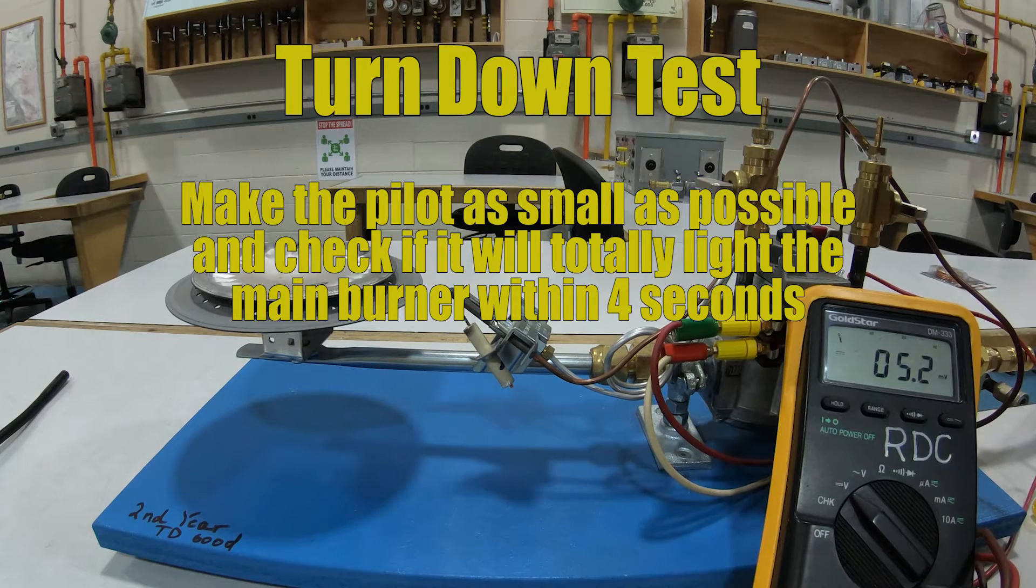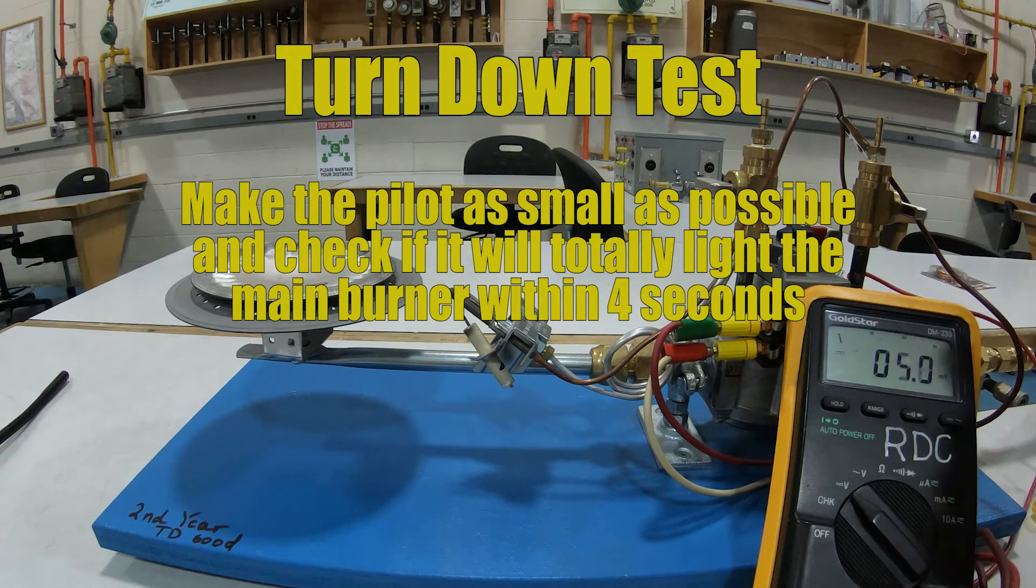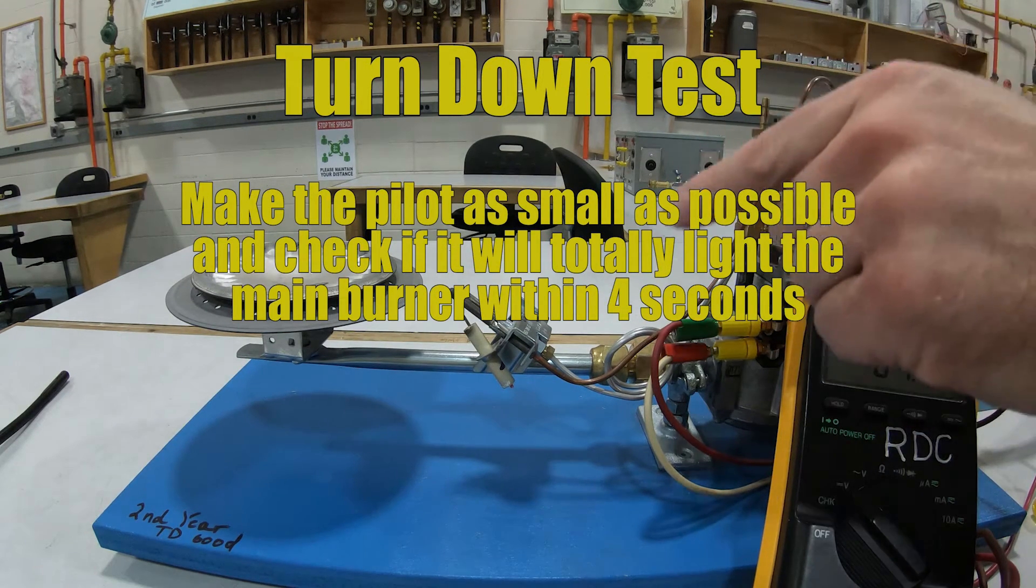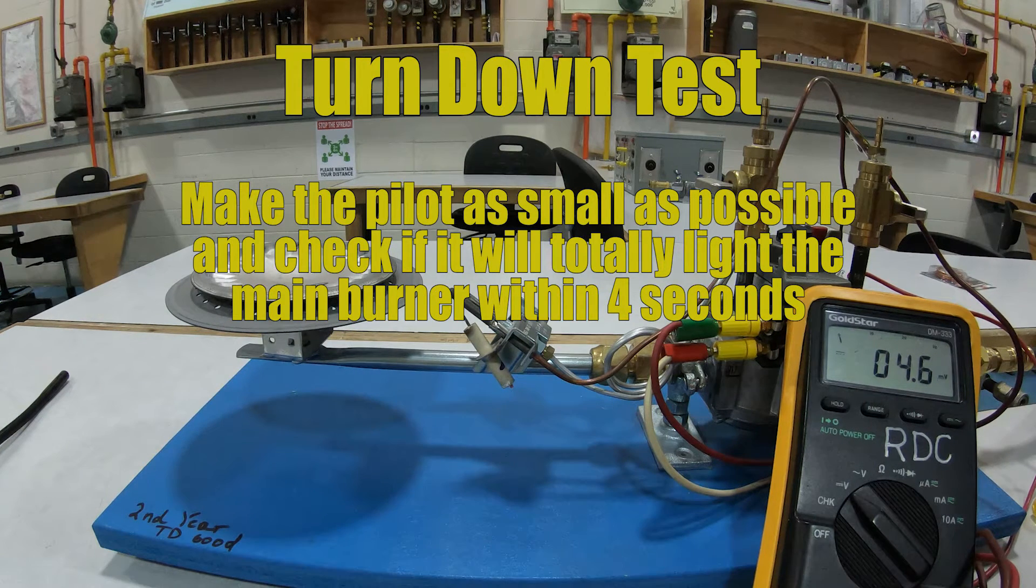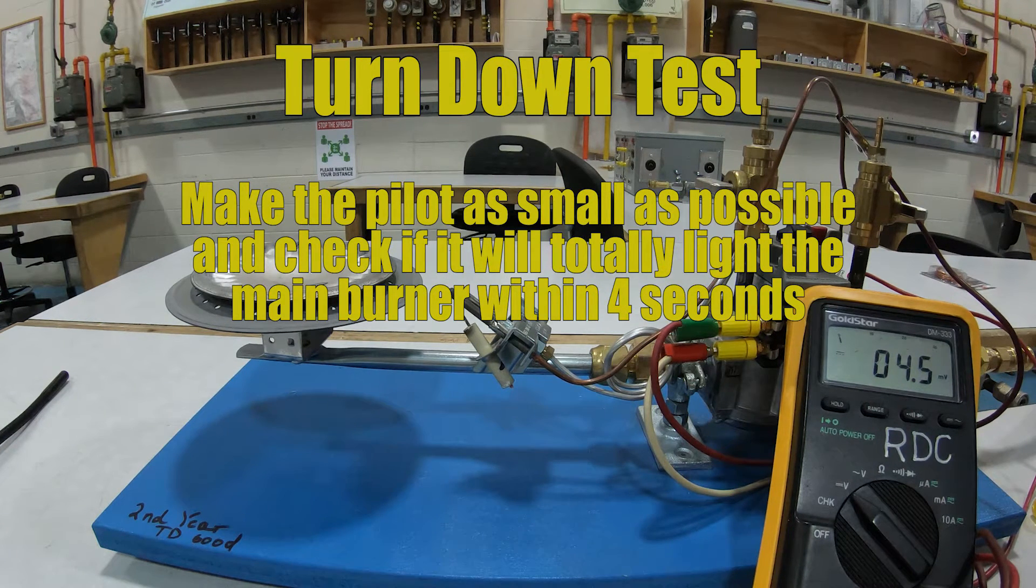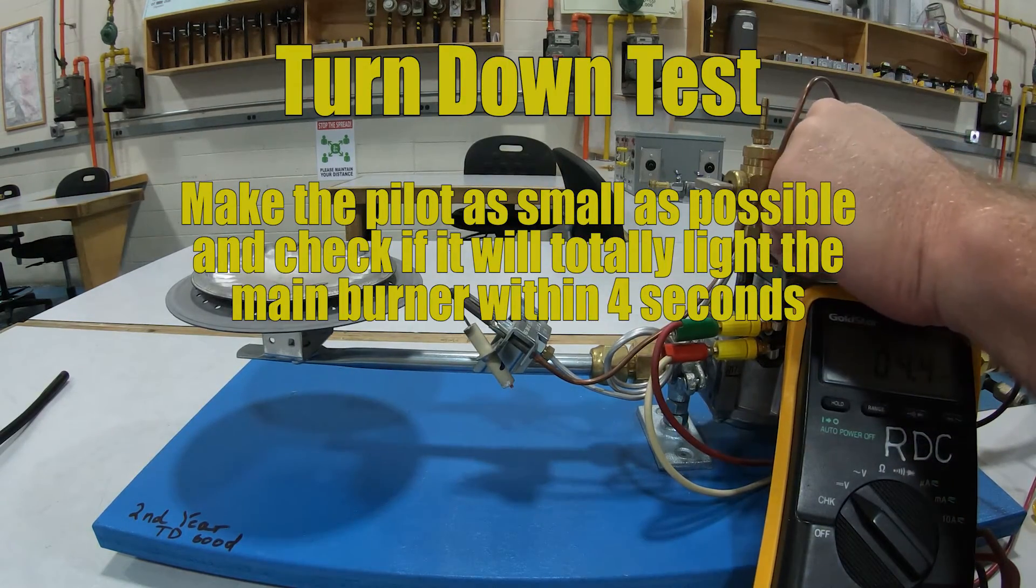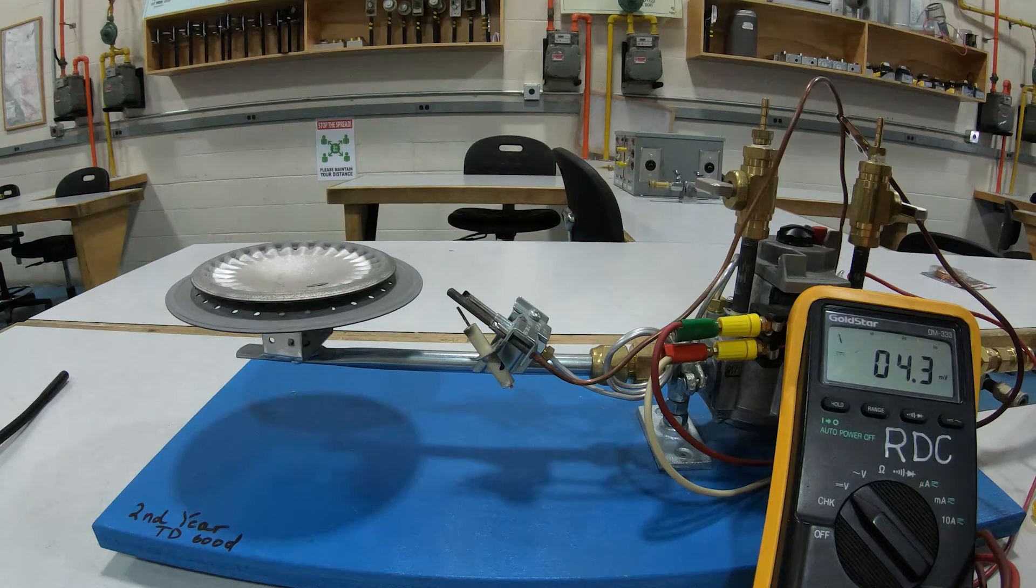Now the purpose of this test when the pilot is at its smallest flame possible to actually keep the power unit open, or better yet keep the pilot flame going. So we're talking the smallest pilot flame possible. Can it light up the main burner quickly or effectively? I'm going to turn this to the on position and we're going to just test it.